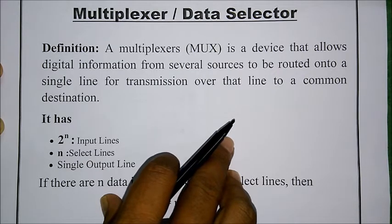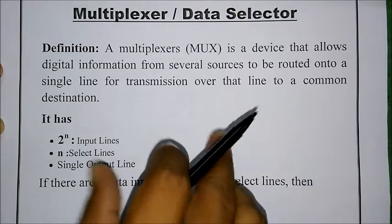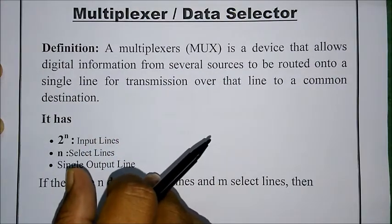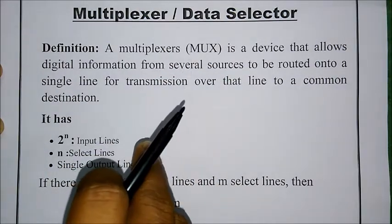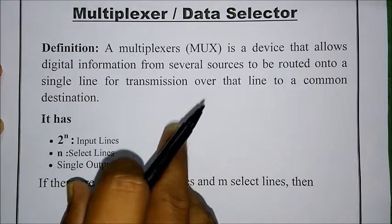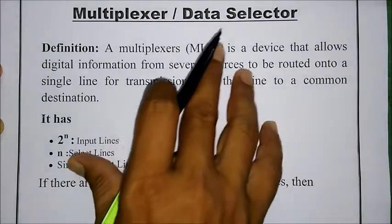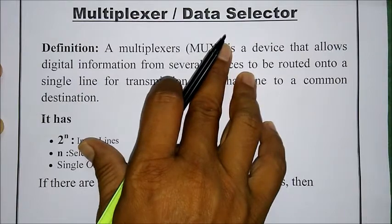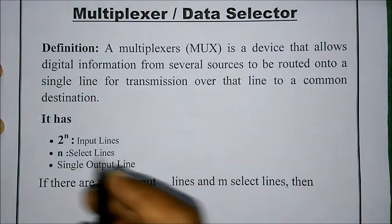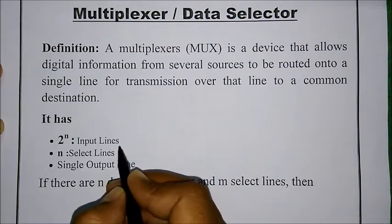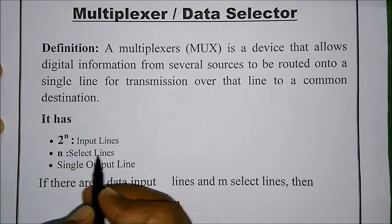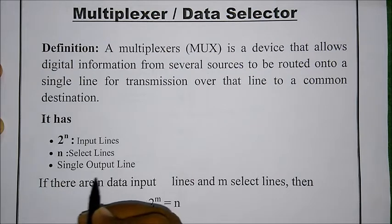What the multiplexer exactly does is all the data given at the input side will be multiplexed together and it will select one among the input lines to the output. That is why it is also called a data selector. A multiplexer has a total of 2^n input lines, n select lines, and a single output line.